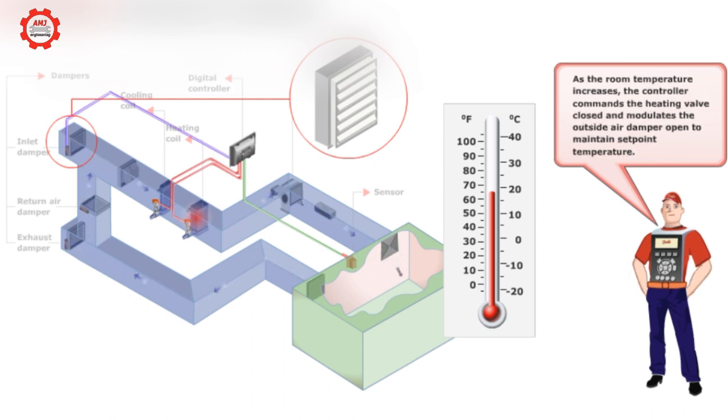As the room temperature increases, the controller commands the heating valve closed and modulates the outside air damper open to maintain set point temperature.